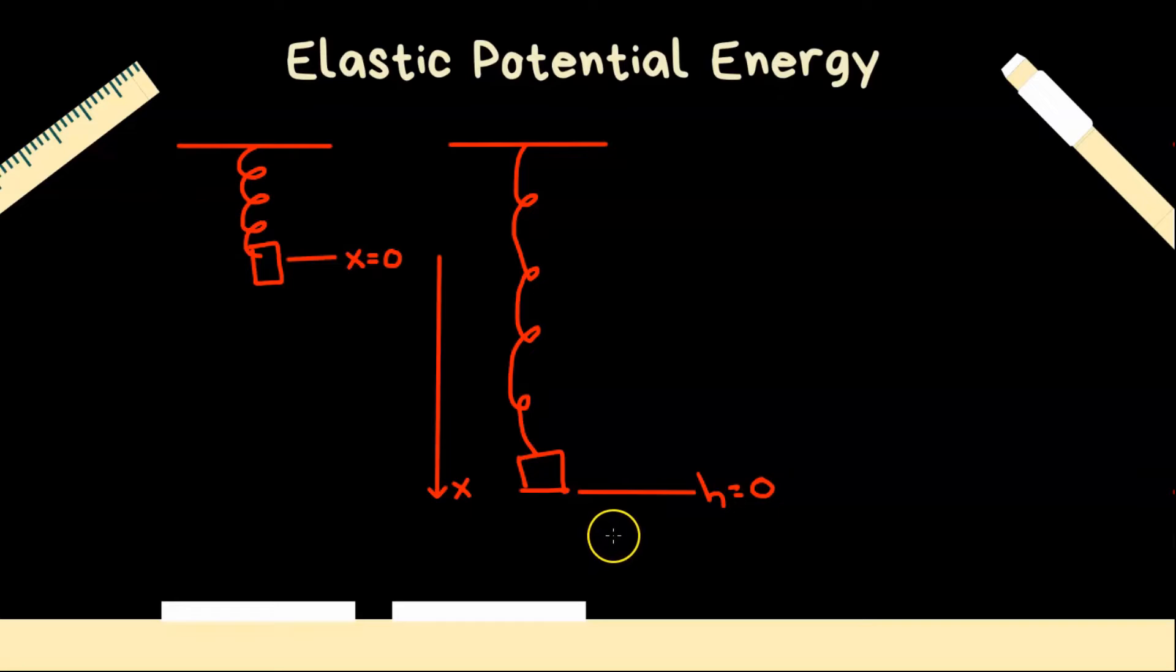So we're going to use energy conservation to solve this problem. Let's call this our before situation, and this our after situation. Now due to energy conservation, the total energy before is going to equal the total energy after. Now over here, our mass is not moving, our spring is not extended, so we neither have kinetic nor elastic potential energy. However, we do have it lifted up above the ground, so its position in a gravitational field gives it gravitational potential energy.